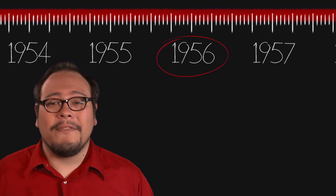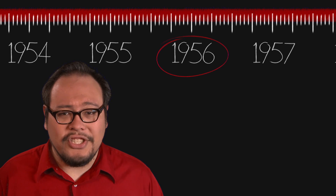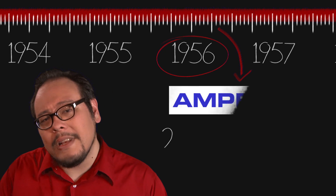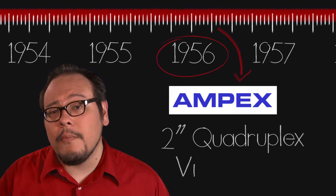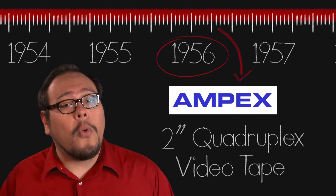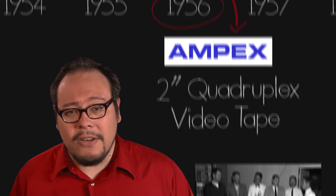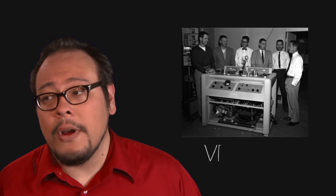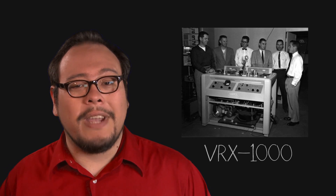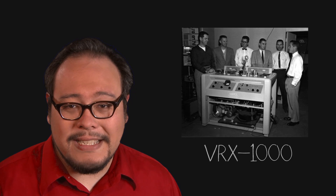In 1956, after 5 years of hard work by brilliant engineers overcoming a myriad of hurdles, Ampex would release the first commercially available video tape recorder — the 2-inch quadruplex video tape. Sales of the first video tape recorder went through the roof when the company showcased it at the NAB convention in April of 1956.